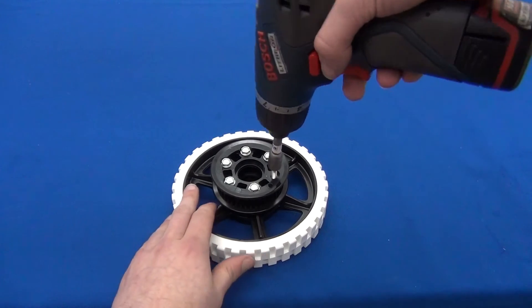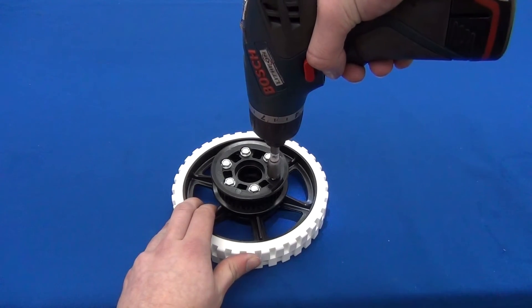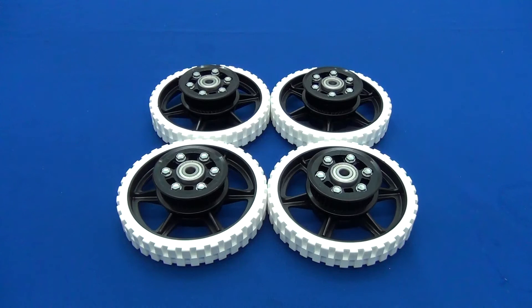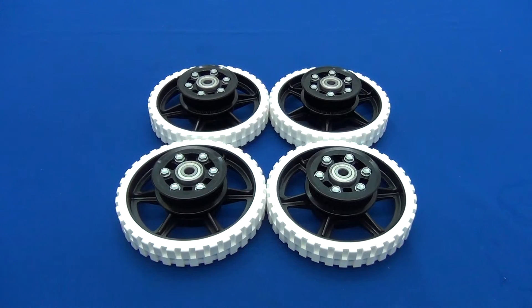Use the shorter of the thread forming screws to attach two pulley halves to each of the wheels. Once attached, press in bearings to both sides of the wheel assembly.